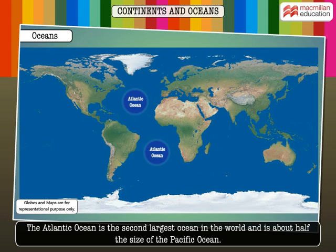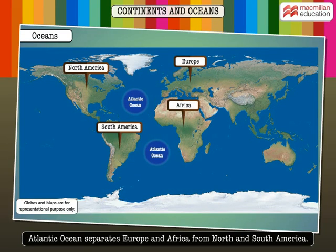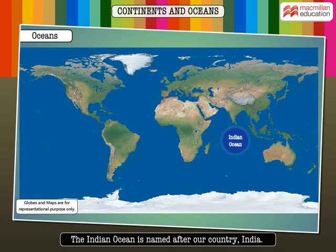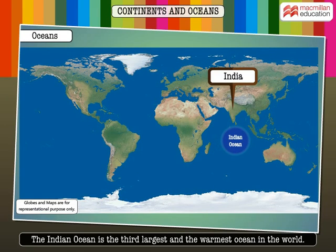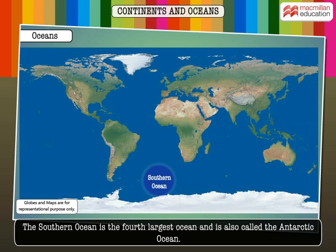The Atlantic Ocean separates Europe and Africa from North and South America. The Indian Ocean is named after our country, India. It is the third largest and the warmest ocean in the world, lying south of India and separating East Africa from Australia.